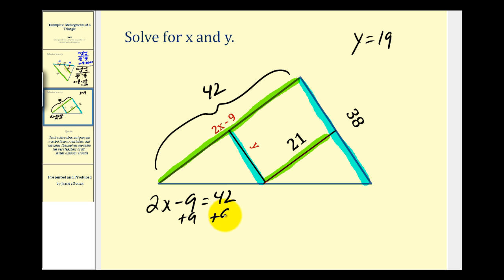So we'll add nine to both sides. We'll have two x equals fifty-one. Divide both sides by two. So we'd have x equals fifty-one halves. Well there's twenty-five twos in fifty-one with a remainder of one, so twenty-five and a half or twenty-five point five.